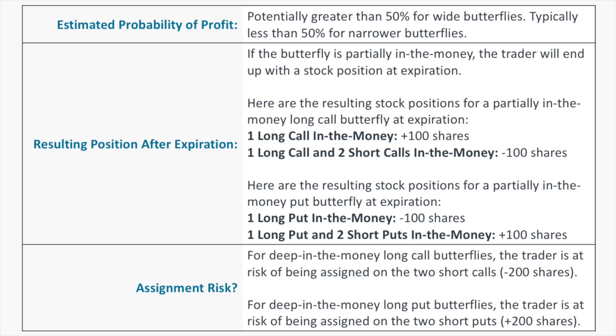For a partially in-the-money long call butterfly: if one long call is in the money, it expires to +100 shares of stock. If one long call and two short calls are in the money, one long and one short call offset each other, but the additional short call expires to -100 shares. For a long put butterfly: if only one long put is in the money, it expires to -100 shares. If one long put and two short puts are in the money, those offset each other, but the additional short put expires to +100 shares.